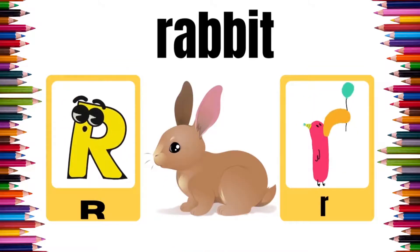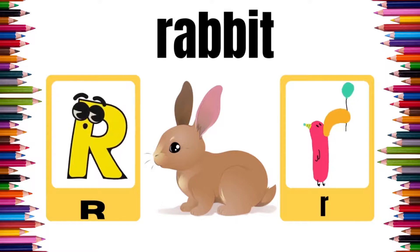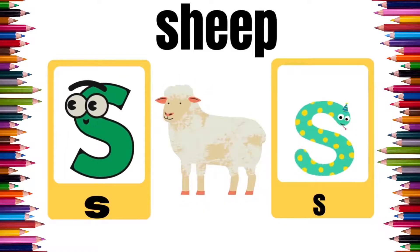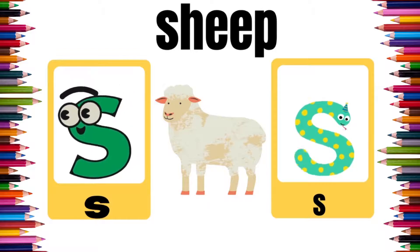R is for Rabbit. R, R, Rabbit. S is for Shape. Sh, Sh, Shape.